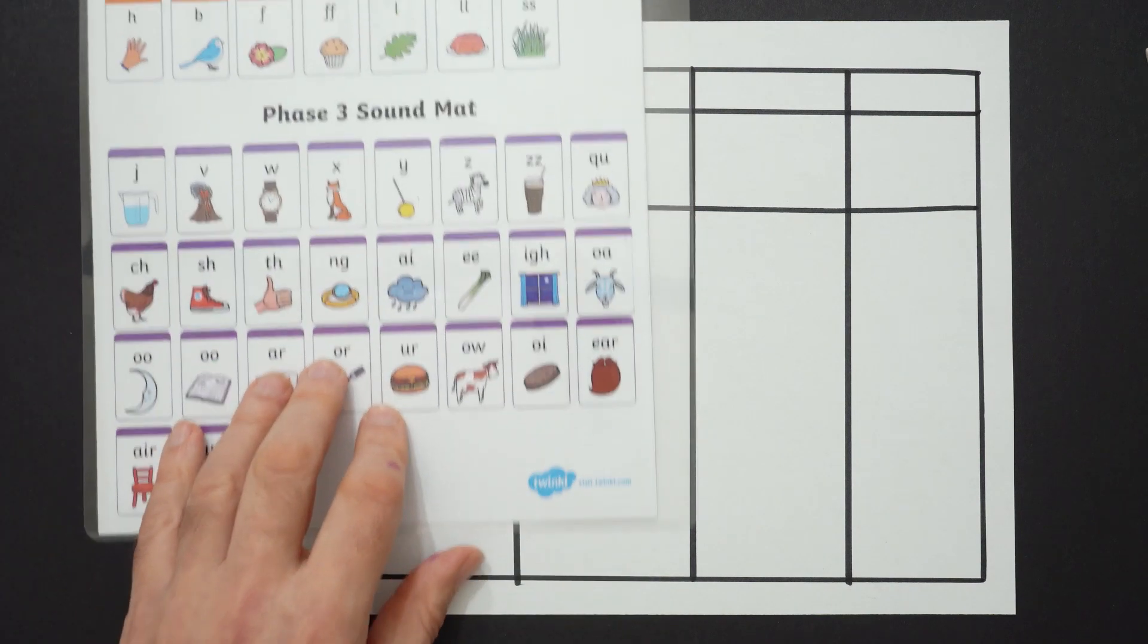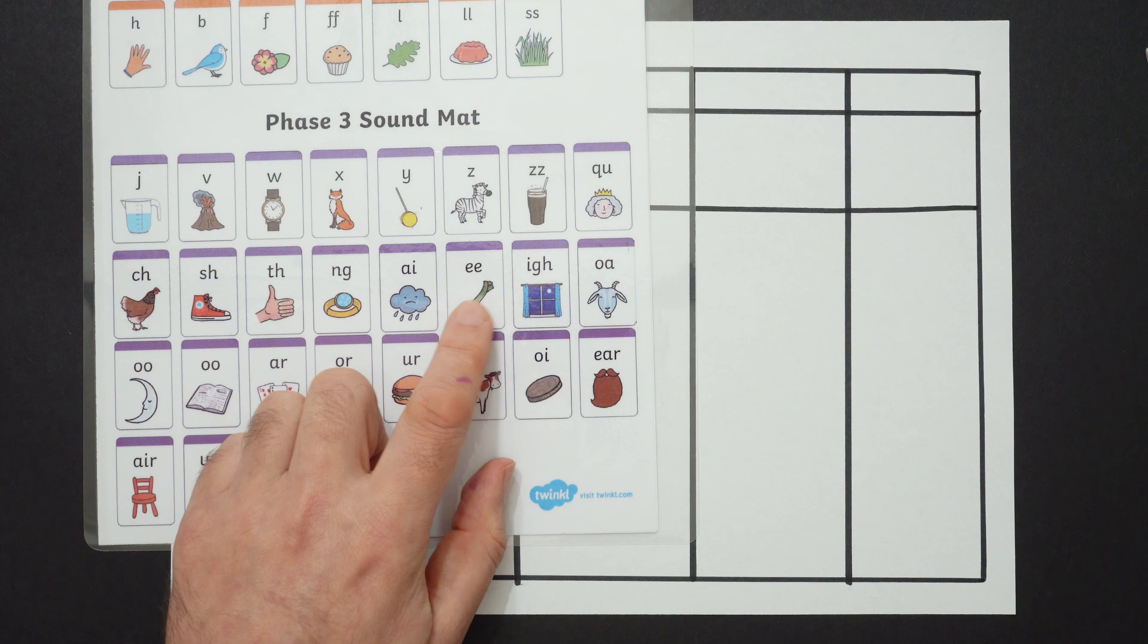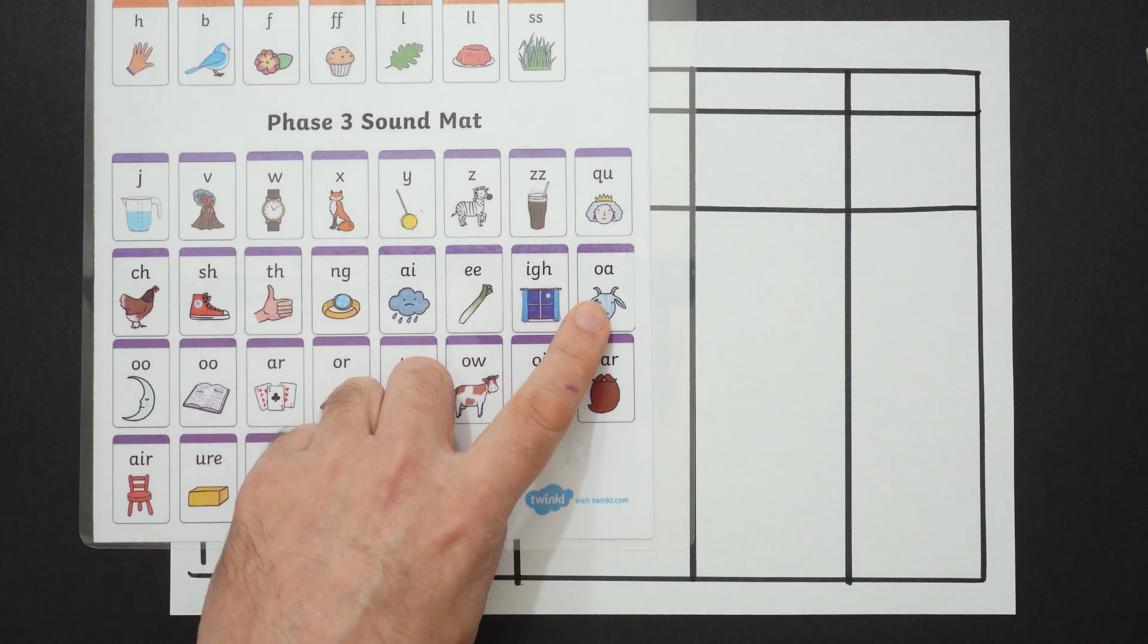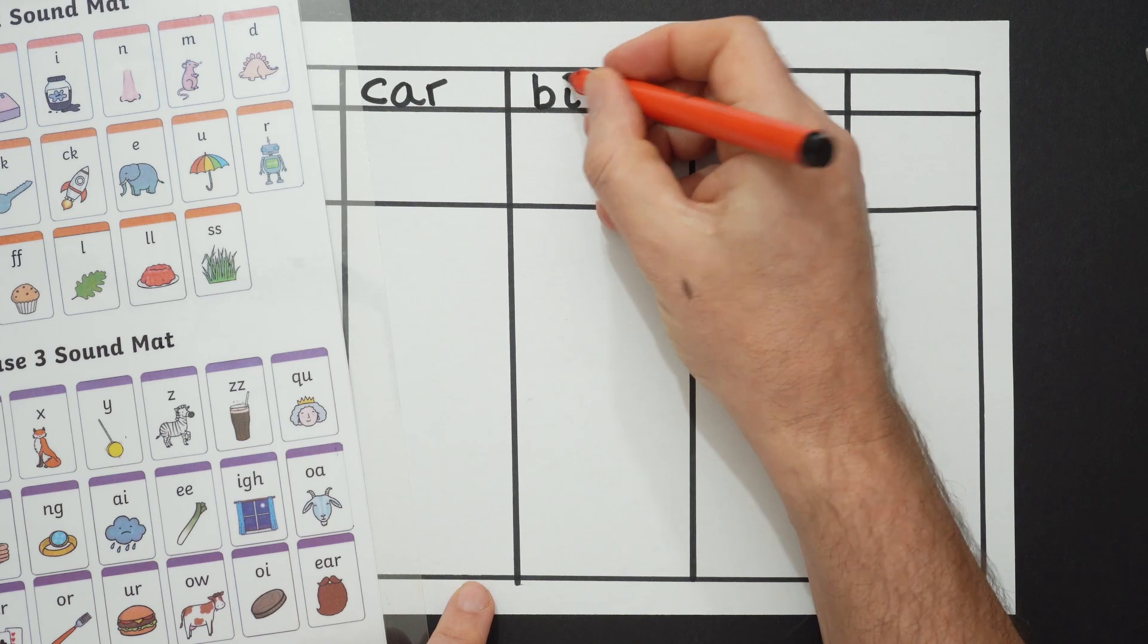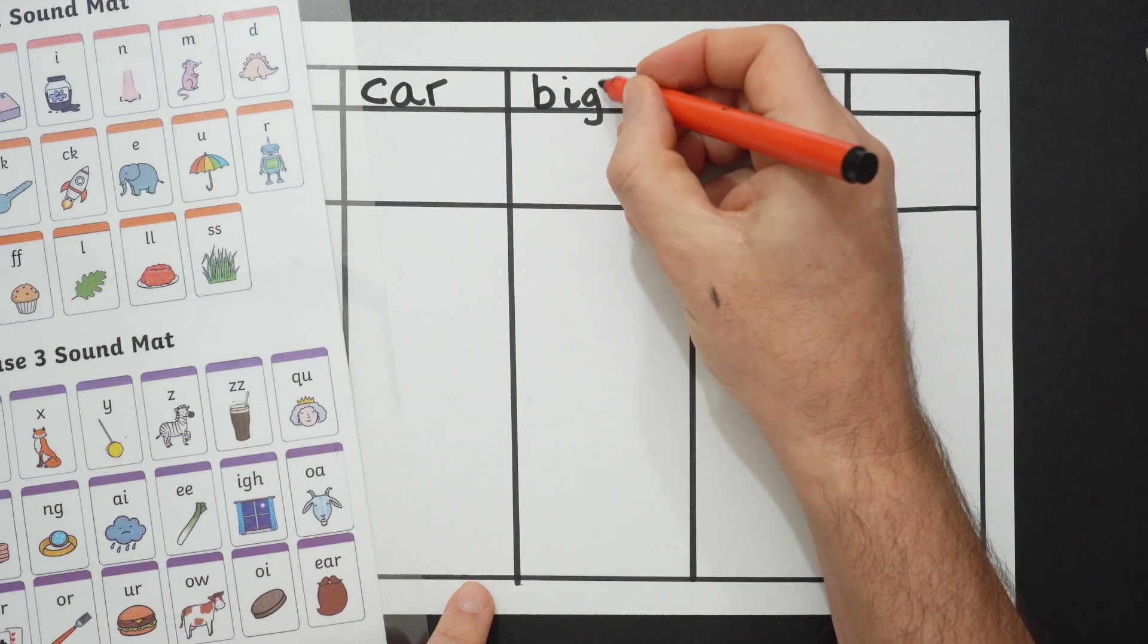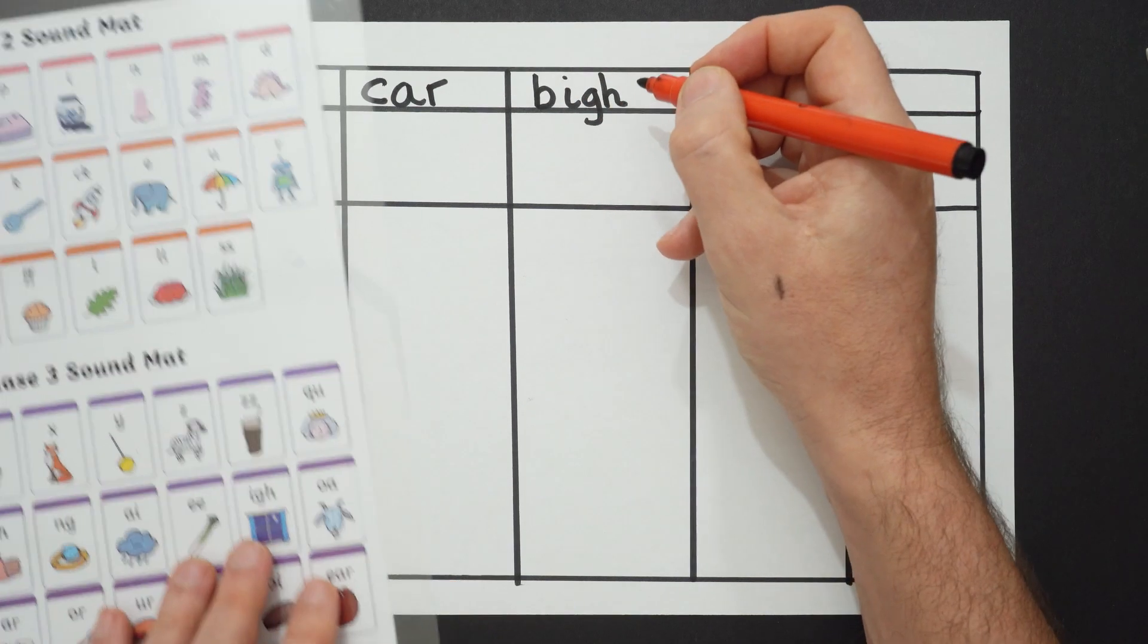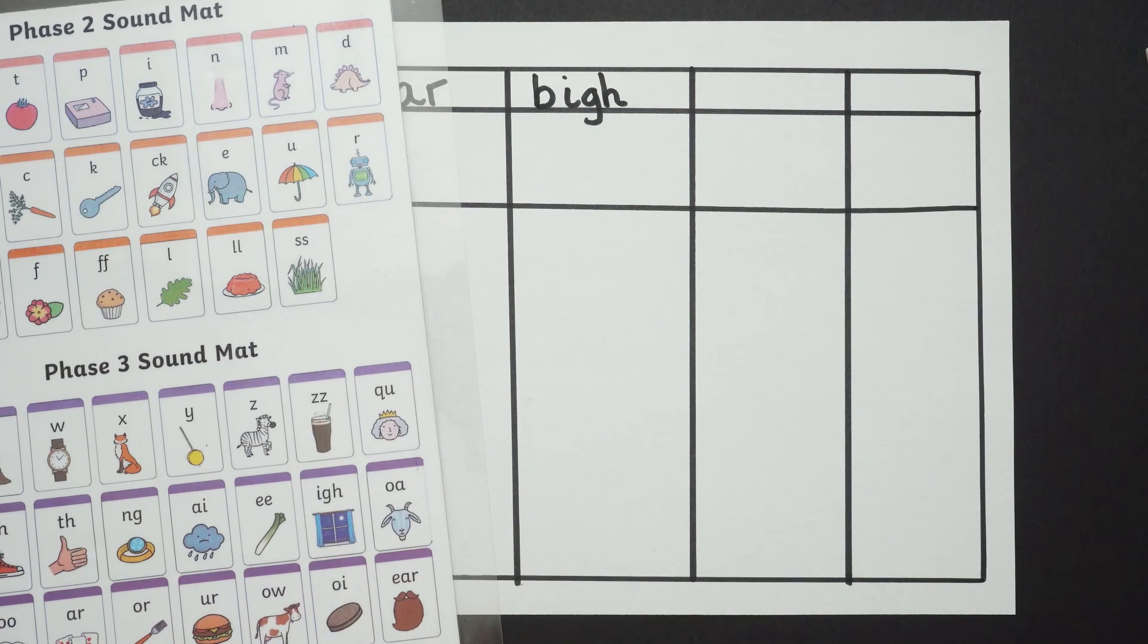Okay, where's the I sound? Rain, leek, night, goat, night. I, I G and the H. Bike. What's the last sound in bike?